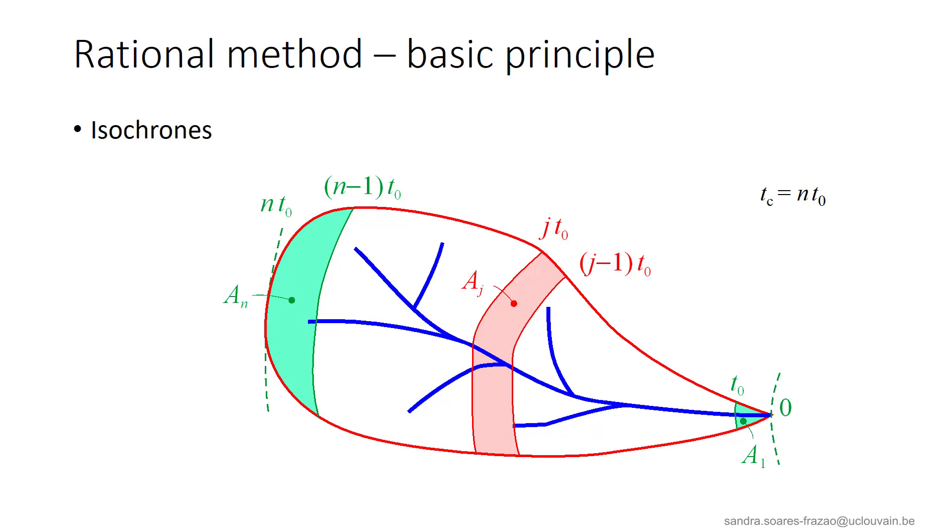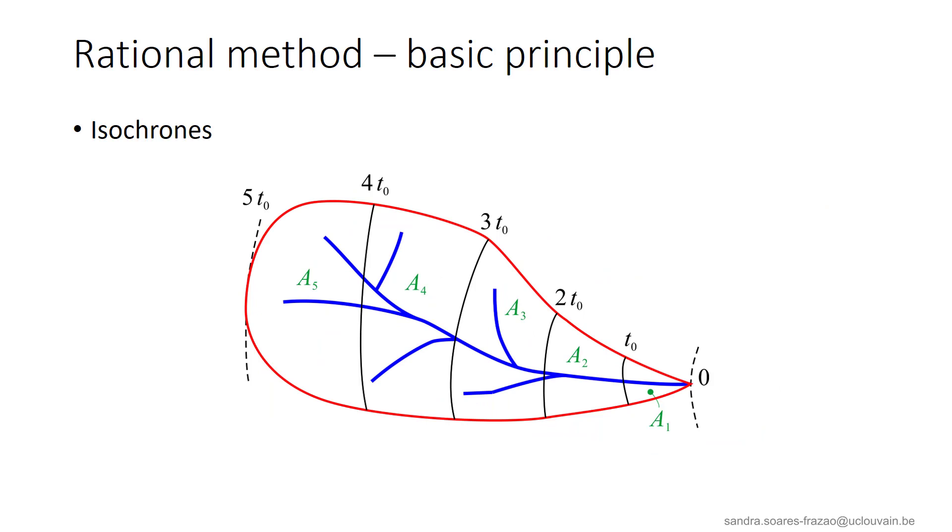The time T0 is a reference time depending on the size of the watershed. For example, it could be 10 minutes or 1 hour or even more. To clarify the construction of the method, we will use an example with 5 isochrones as illustrated here. This means that the time of concentration of this catchment is 5 times T0.